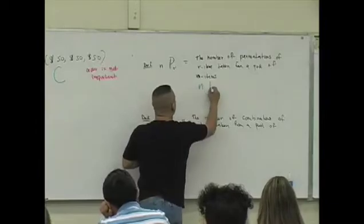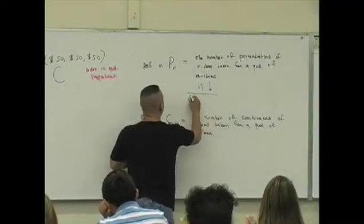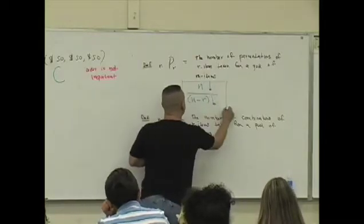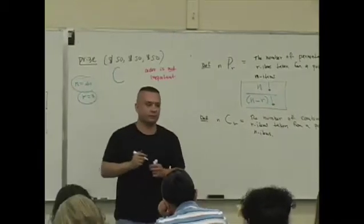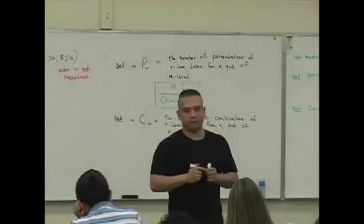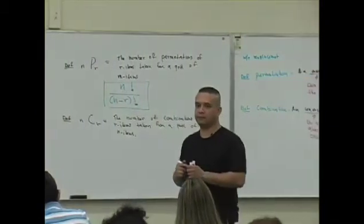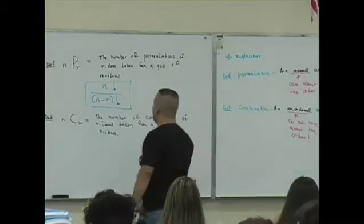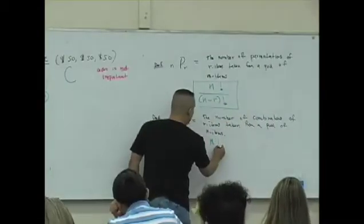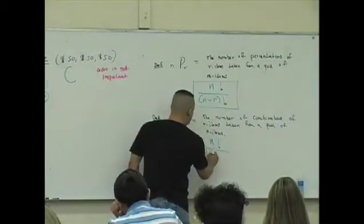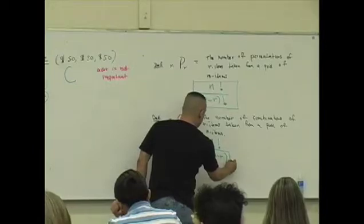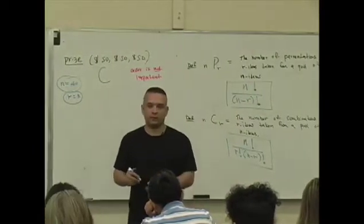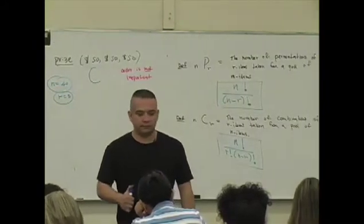You guys ready for the formula? Here we go. nPr is defined to be n factorial divided by (n minus r) factorial. The combination formula is n factorial over r factorial times (n minus r) factorial.